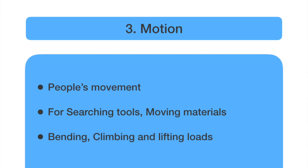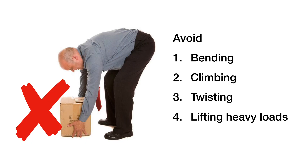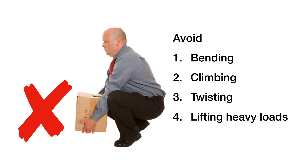The third waste is people movement, or motion. Whenever people move inside the factory, there is no value addition to the product. For example, they move material from one place to another along with transportation, or they move to search for tools, bring in jigs and fixtures. There are also instances where people have to bend or climb because materials are stored on the floor, requiring them to bend and lift every time. People movement or motion is a waste.